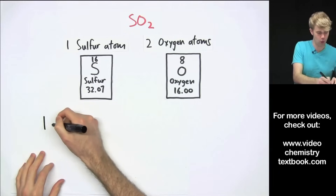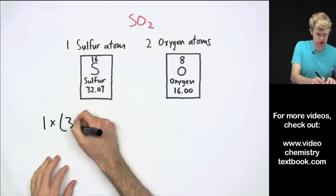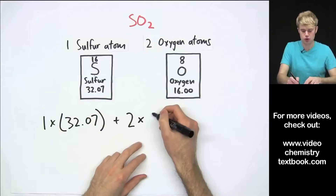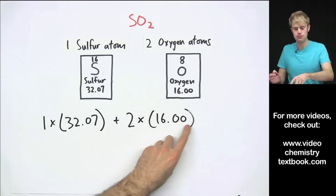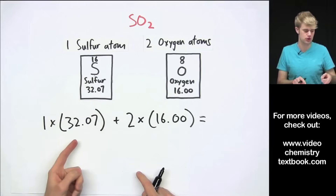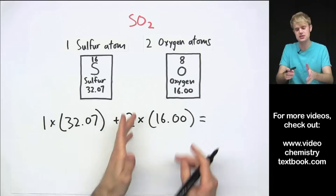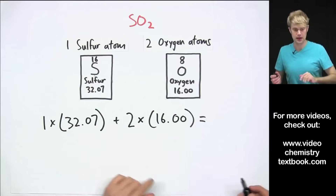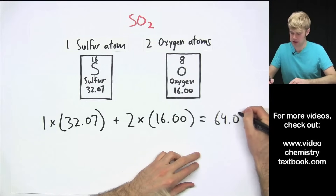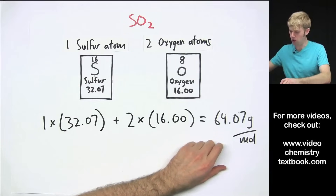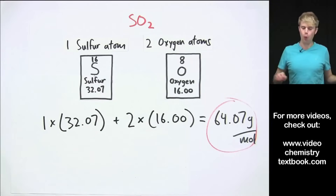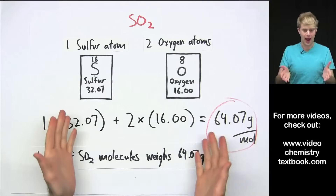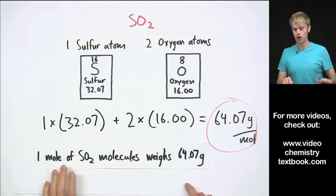We have one sulfur atom, so we do one times how much sulfur weighs, which is 32.07, plus two because we have two oxygens, times how much oxygen weighs, which is 16.00. You don't really have to write the one, but it makes things more consistent. One times 32.07 plus two times 16.00 gives us 64.07 grams per mole. This means that one mole of SO₂ weighs 64.07 grams.